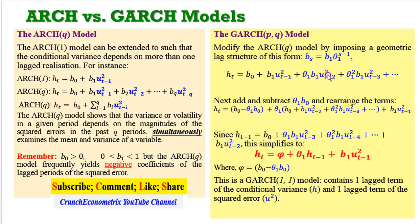The GARCH(Q) model is an improvement on the ARCH model, given the construction of the conditional variance. I'm not going to go deeply into the econometric permutations involved — please check the references at the end of this video for those details. But the key point is that the conditional variance H_t is now a function of its own lagged value and the lagged value of the squared error term. The basic difference between the ARCH and GARCH model in econometric specification is the inclusion of the lagged value of the conditional variance as a regressor on the right-hand side of the model.